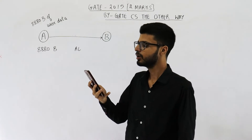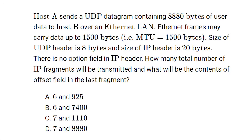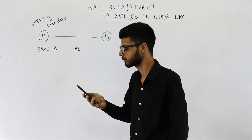The question is: Host A sends a UDP datagram containing 8880 bytes of user data to host B over an Ethernet LAN. Ethernet frames may contain data up to 1500 bytes, that is MTU equals 1500 bytes. Size of UDP header is 8 bytes and size of IP header is 20 bytes. There is no option field in IP header. How many total number of IP fragments will be transmitted and what will be the contents of the offset field in the last fragment?